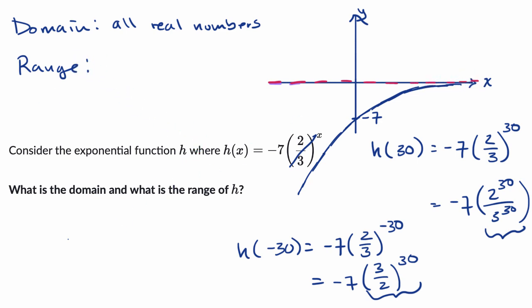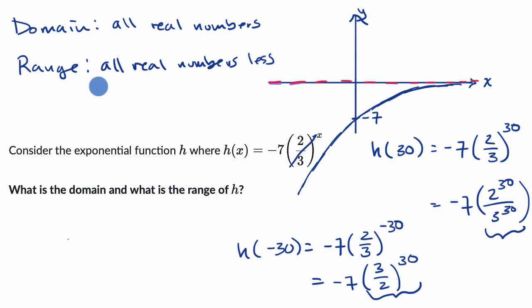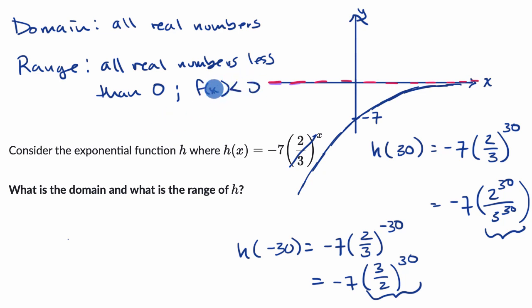So what's the range? We could say all real numbers less than zero. Or we could say f of x can take on any value less than zero — f of x is going to be less than zero. It approaches zero as x gets larger and larger, but never quite gets there.